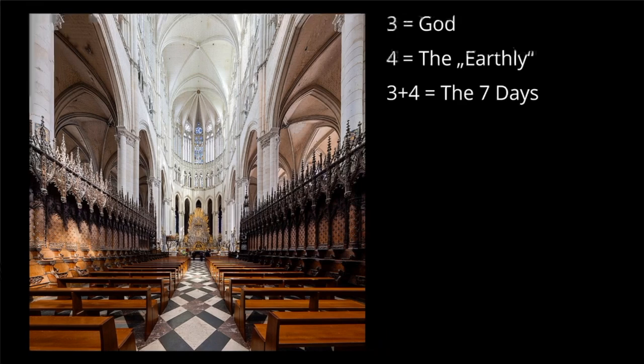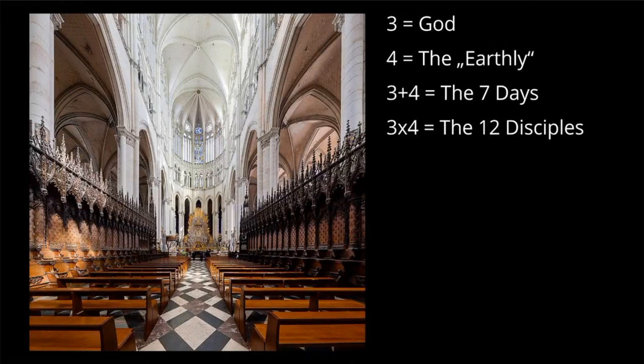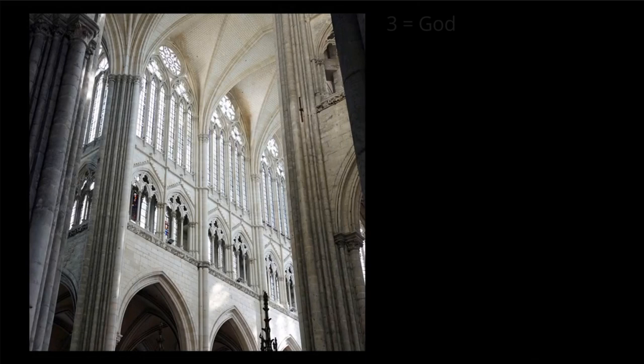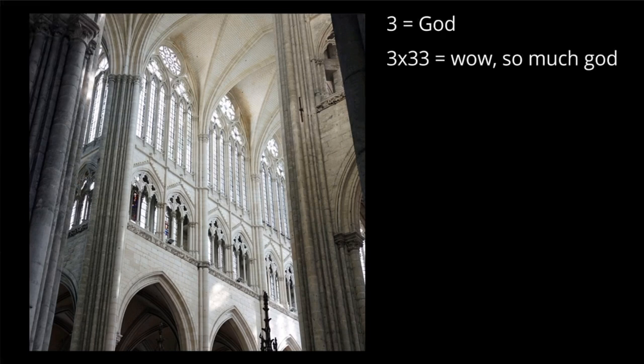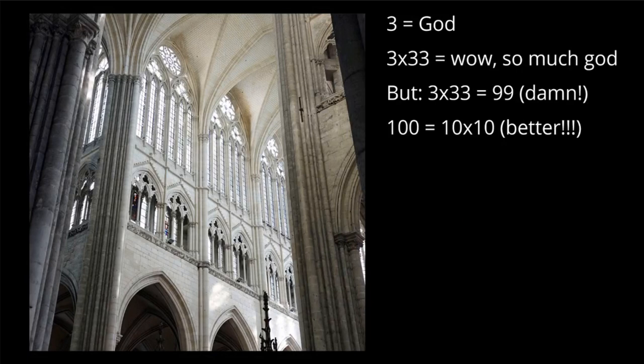Seven is an example where a number is symbolic — human plus God. Three times four gives the twelve disciples of Jesus. Here's another picture of the same cathedral. Three is God again, and three times 33 equals 99. They had the task of placing a certain number of monks in that church to sing in a choir. They wanted to create a choir of monks, and three times 33 reaches 99.